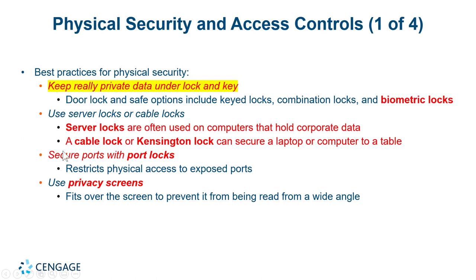What are the best practices for physical security and access control? Keep really private data under lock and key. Anything on a network or on a computer connected to a network can be accessed one way or another. If it's really important data, keep it behind a locked door or in a safe. Door lock and safe options include key locks, combination locks, and biometric locks.